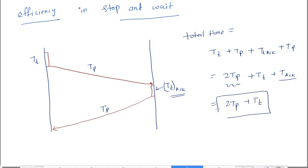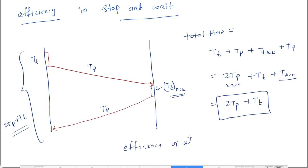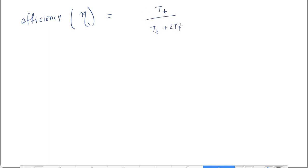In this total time of tt + 2tp, the sender is actually transmitting only for tt. So efficiency (η) is tt divided by (tt + 2tp). Dividing numerator and denominator by tt gives η = 1 / (1 + 2a), where a = tp / tt.